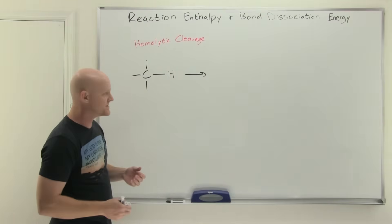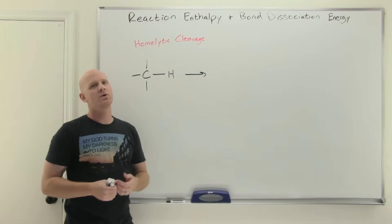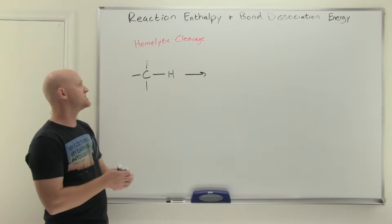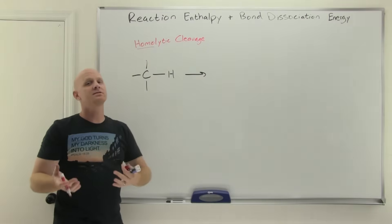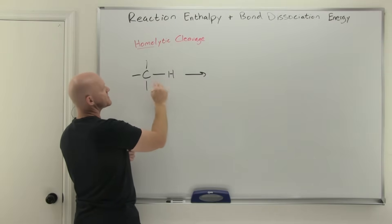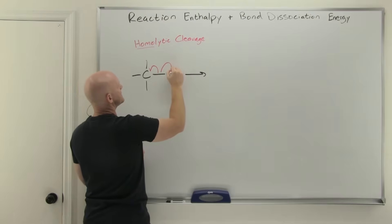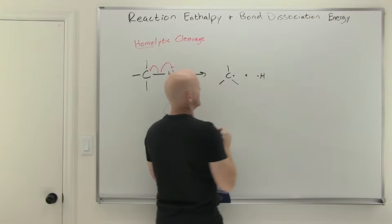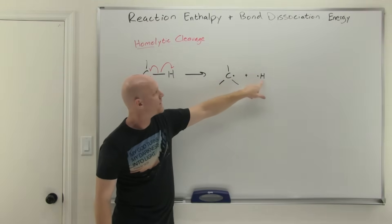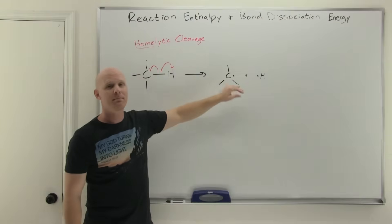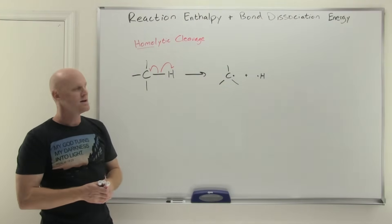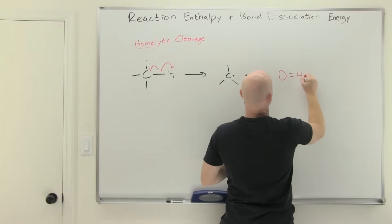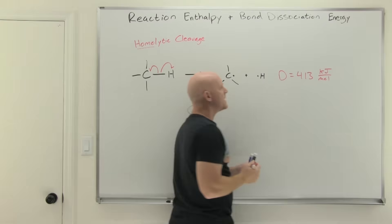Now we're going to take a look at bond dissociation energies. A bond dissociation energy is for breaking a bond — but there are two ways to break a bond: homolytic and heterolytic cleavage. We're going to be doing homolytic cleavage, which is how bond dissociation energy is defined. The homo part refers to the fact that both sides of the bond get the same thing — they both get one electron. So if we break a carbon-hydrogen bond, one electron goes back to the carbon and one goes to the hydrogen, resulting in a pair of radicals. The energy it takes to break that bond homolytically is defined as the bond dissociation energy, or bond enthalpy, which in this case equals 413 kilojoules per mole.